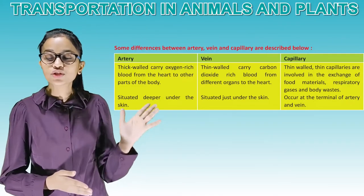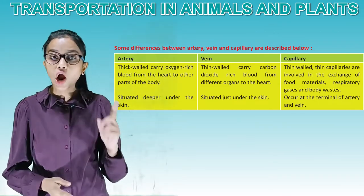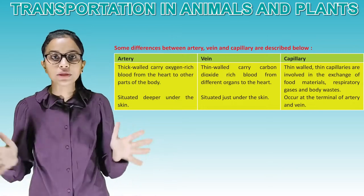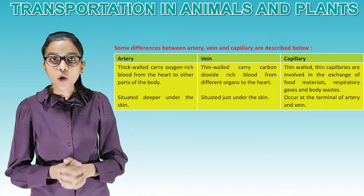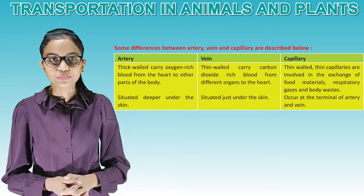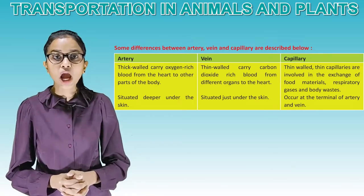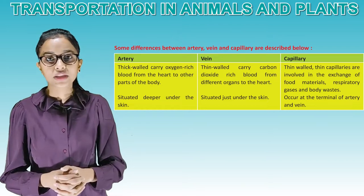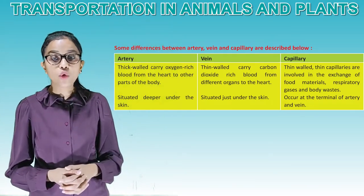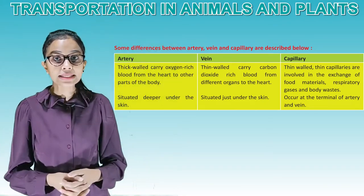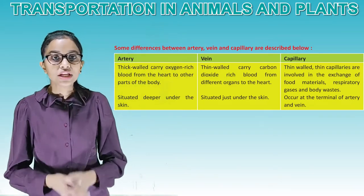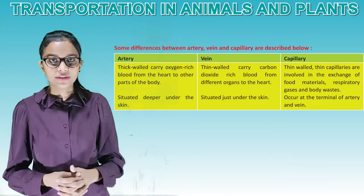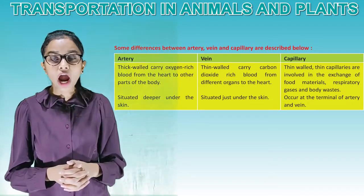This chart shows the difference between artery, vein and capillary. Artery: thick walls, carries oxygen-rich blood from the heart to other parts of the body, situated deeper under the skin. Vein: thin walls, carries carbon dioxide-rich blood from different organs to the heart, situated just under the skin. Capillary: thin walls, involved in the exchange of food materials, respiratory gases and body wastes, occurs at the terminal of artery and vein.